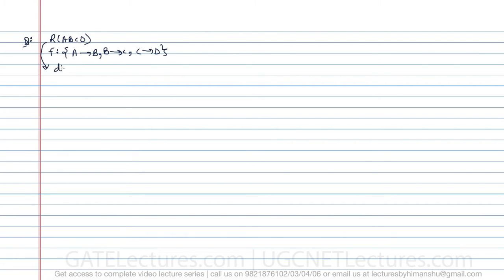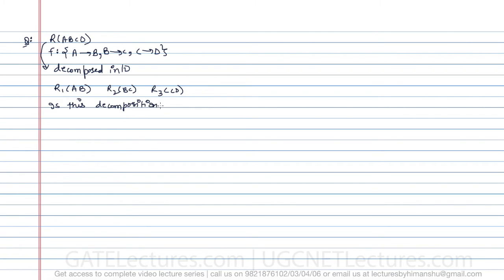This table is decomposed into three relations: R1(A,B), R2(B,C), and R3(C,D). We are asking whether this decomposition is lossless or not. Here they are giving us the complete R(A,B,C,D) relation broken down into three parts.